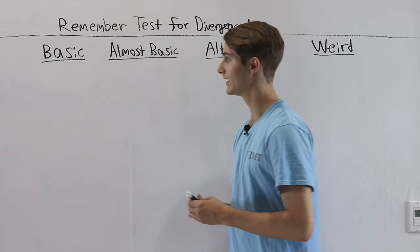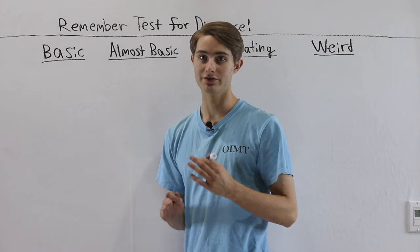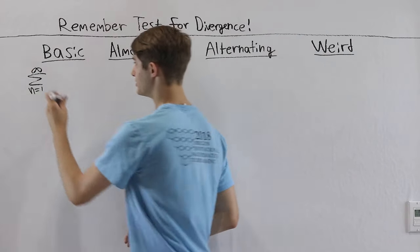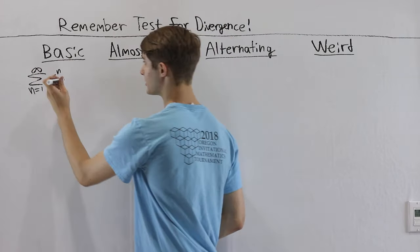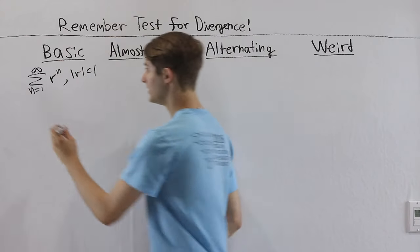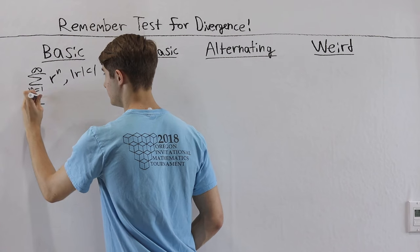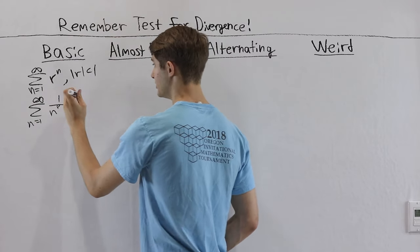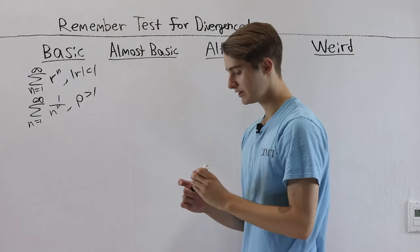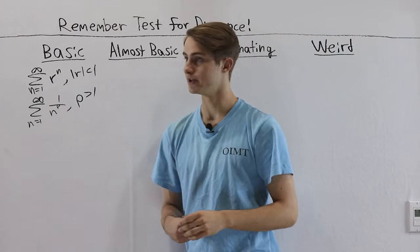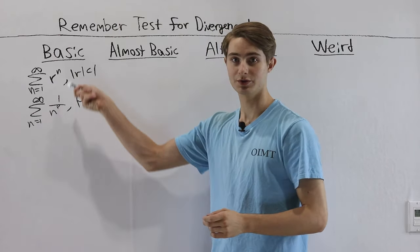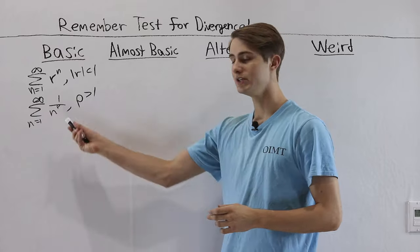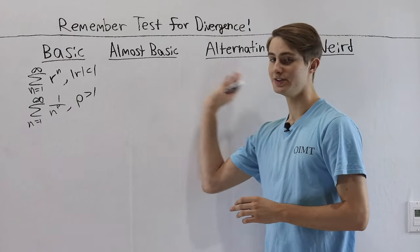Let's start with the basic category — series that we already know whether they converge or diverge right away. Those are the geometric series, the sum from n equals 1 to infinity of r to the n, which converges when the absolute value of r is less than 1, and the p-series, the sum from n equals 1 to infinity of 1 over n to the power of p, which converges when p is greater than 1. When we see a series we can write in one of these two forms, we should always do that first.